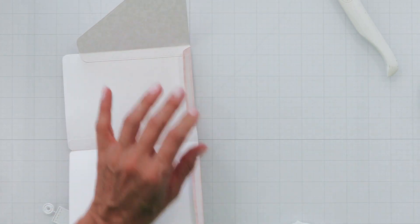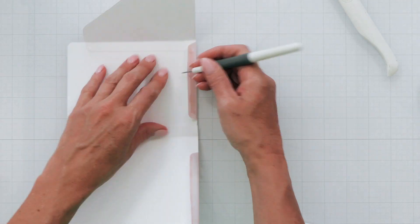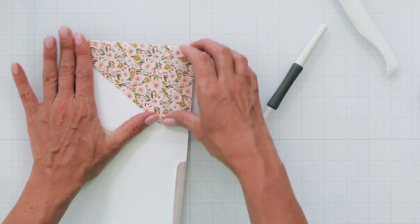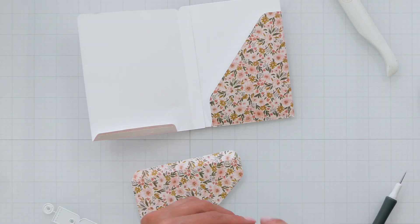Now you'll remove the protective covering of that bottom flap, folding over the pocket and making sure it's nice and straight, and there you have the inside pocket.